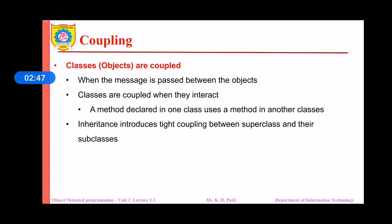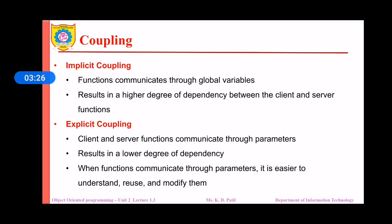The objects or classes are coupled in different ways. When a message is passed between the objects, there will be coupling. Classes are coupled when they interact — a method declared in one class uses a method in another class, or a method declared in one class uses the variables of another class. Inheritance produces a tight coupling between a superclass and subclass, as subclasses inherit almost all the methods and variables of the superclass.